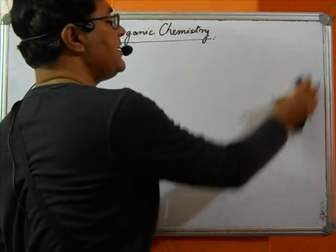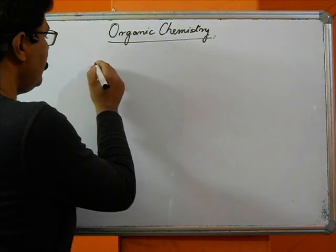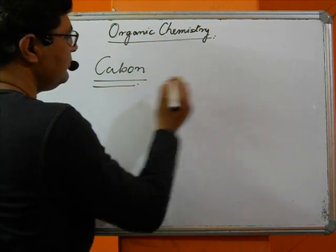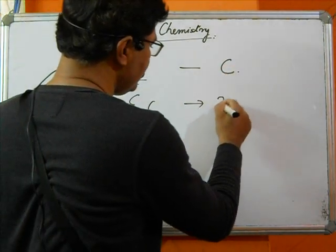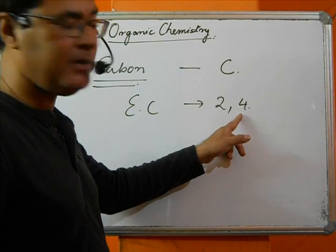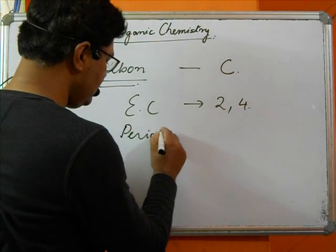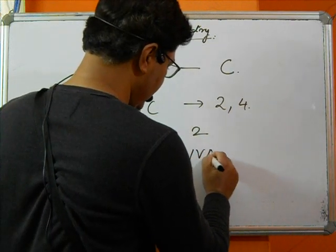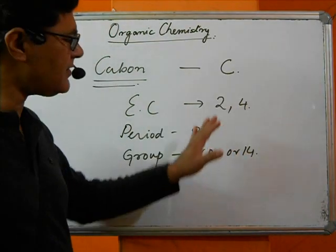Let us understand what is so unique about carbon. Carbon has the symbol C and an electronic configuration of 2, 4. That means it has four electrons in the outermost shell. Carbon is in Group 4A of the periodic table. This is the position of carbon.